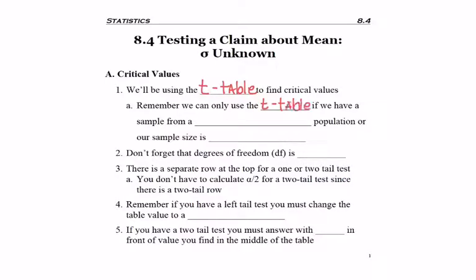Remember, you can only use the t-table if we have a sample that comes from a normally distributed population, or our sample size is greater than or equal to 30, so essentially n greater than or equal to 30.